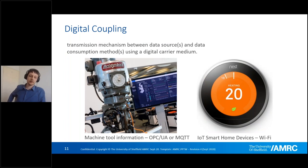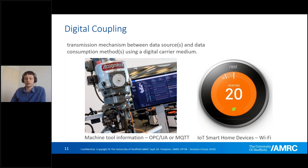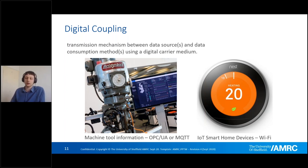Digital coupling covers a wide range — from machine tools and shop floor connectivity through to IoT smart home devices. As long as it's digitally connected — whether a database, OPC UA which is common within manufacturing shop floor systems, MQTT, or a Wi-Fi protocol — as long as it's connected and doing it automatically, then we meet that requirement.